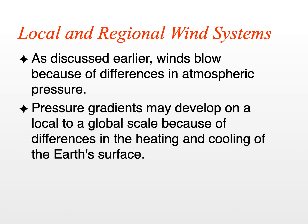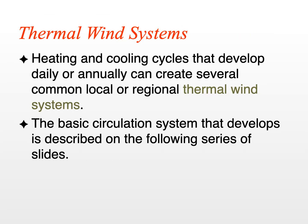Let's begin by discussing local and regional wind systems. As discussed earlier in this chapter, winds blow because of differences in atmospheric pressure. Pressure gradients can develop from local to global scale, and often these pressure gradients are the result of differences in the heating and cooling of the Earth's surface spatially. These local and regional wind systems are the result of thermal differences in temperature across the Earth's surface, developing because of heating and cooling cycles that form on a daily or annual basis.